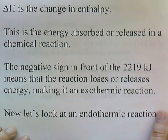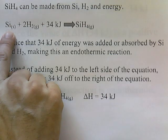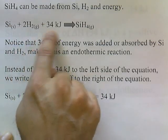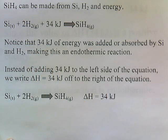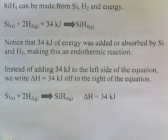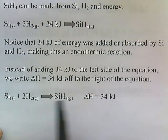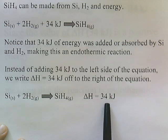Now let's take a look at an endothermic reaction. SiH4 can be made from silicon, hydrogen, and energy. If you take solid silicon and react it with hydrogen gas and add some energy to it, you'll end up with silicon tetrahydride. The 34 kilojoules of energy is on the left side of the arrow, meaning it's being added. But instead of adding 34 kilojoules to the left side of the equation, we write delta H equals 34 kilojoules off to the right of the equation.